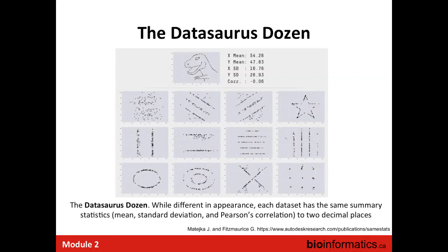They all have a correlation of 0.8, but you can observe that the data are pretty different, and the basic statistics wouldn't give you a clue about that. Another dataset published by a group in Toronto is the datasaurus dozen. They took an image of a dinosaur, and with the same points, all 12 images have the same x and y mean, standard deviation, and correlation, but obviously they have different patterns. They wanted to show that statistics is really good, but visualization is important as well.